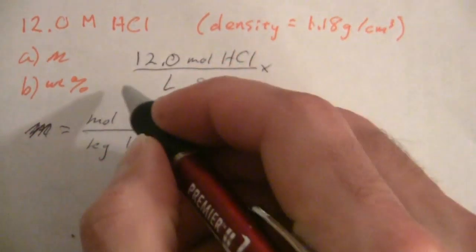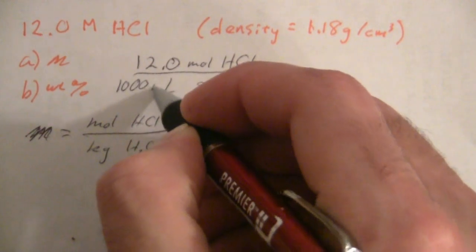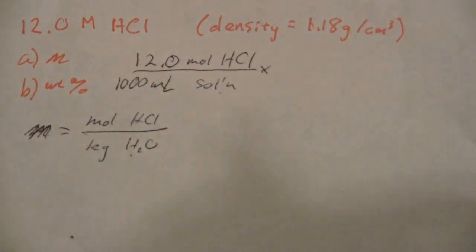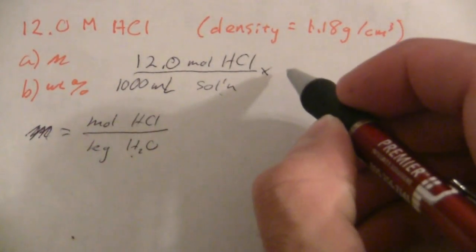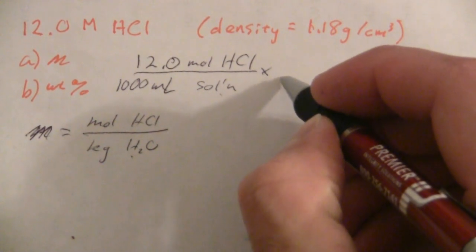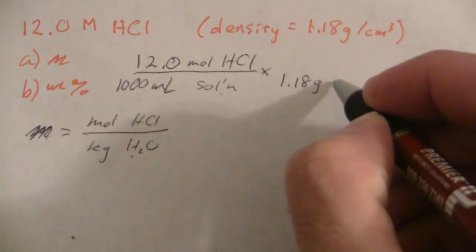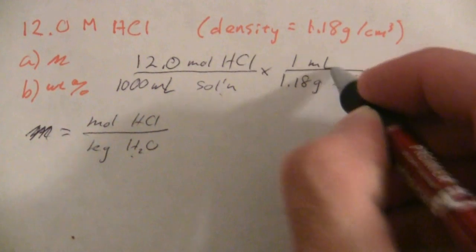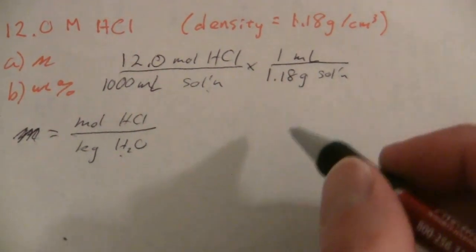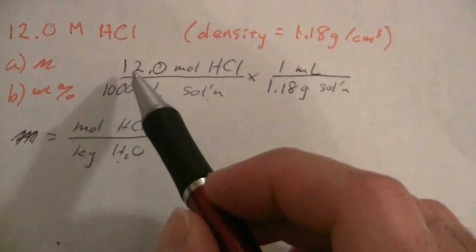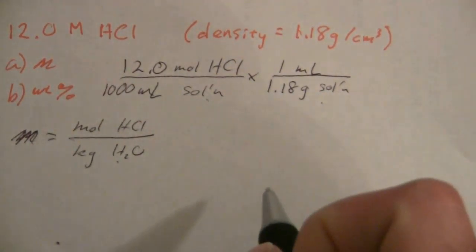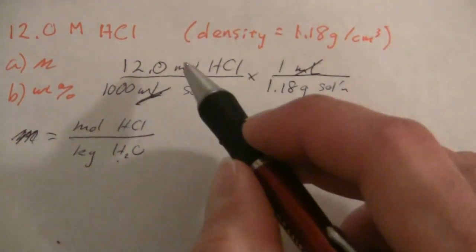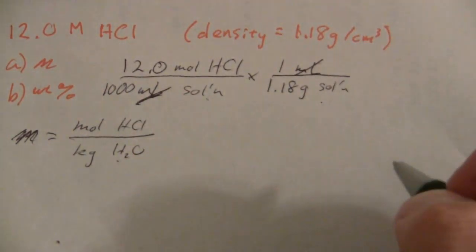Okay, and I'm just going to take a little shortcut here and put this as 1,000 milliliters. So 12.0 moles of HCl per thousand milliliters of the solution. All right, and then I have 1.18 grams of the solution per 1 milliliter. Okay, so now what I have is moles per gram because my milliliters of the solution will cancel. I'll have moles of HCl per gram of the solution.